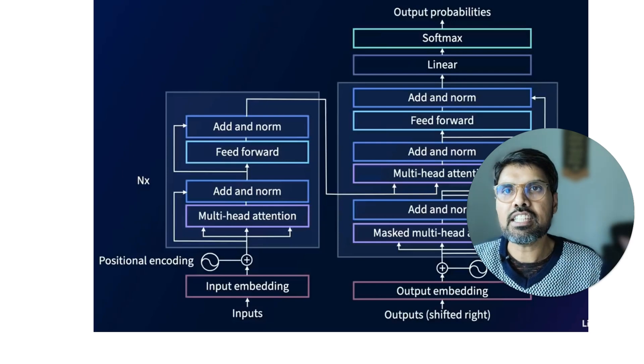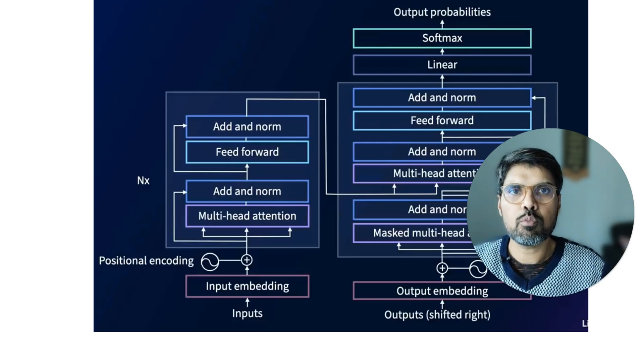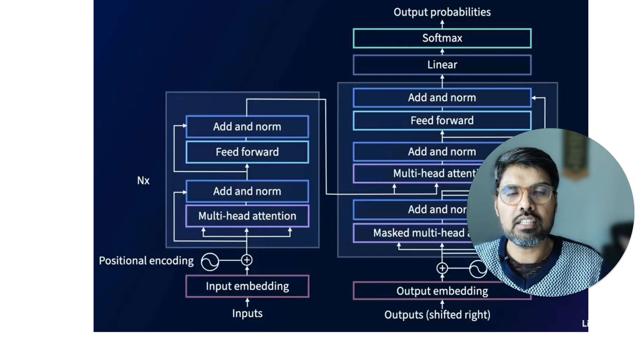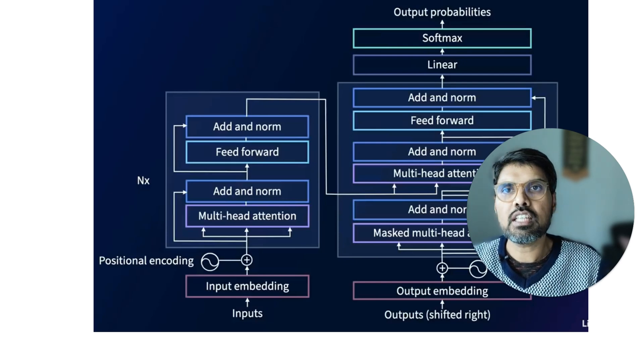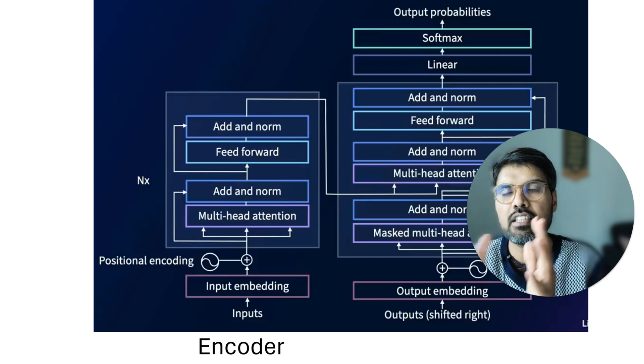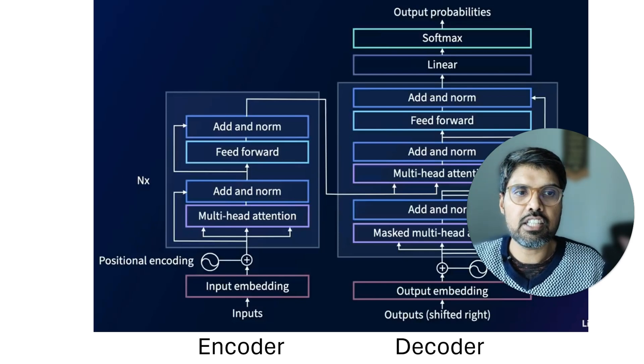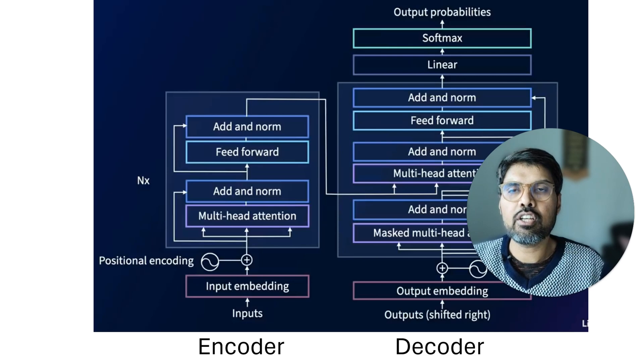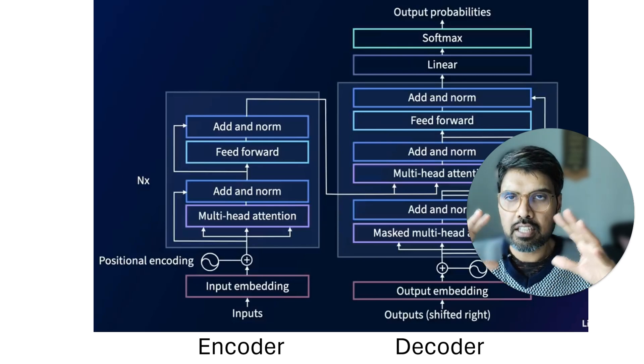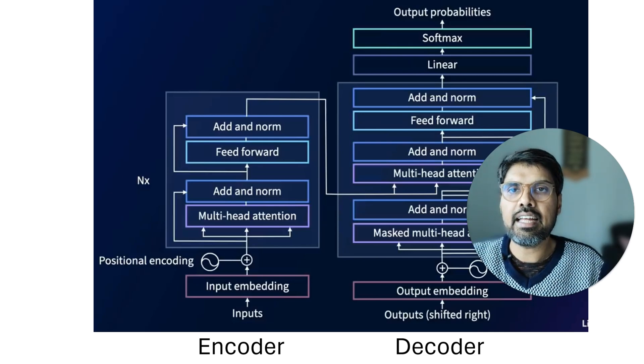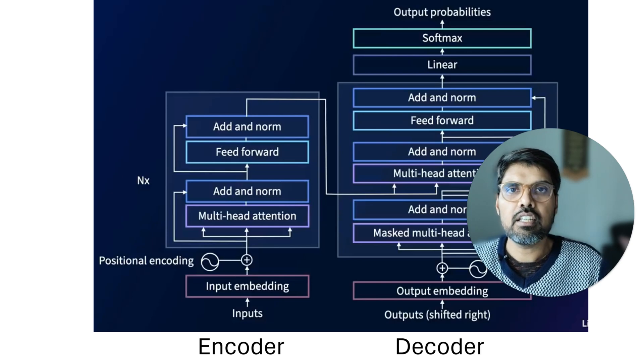Talking about each individual component is out of scope for this video, but in brief, the main components are: the left side is the encoder part and the right side is the decoder part. The encoder and decoder together contain the whole transformer architecture.